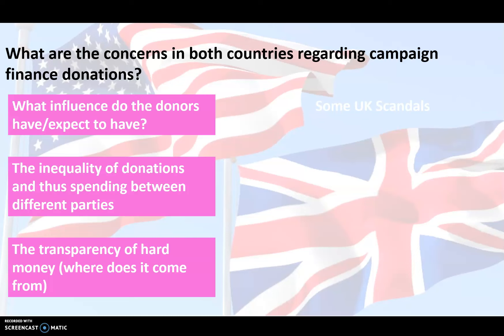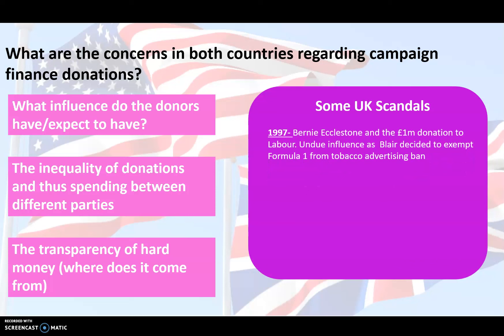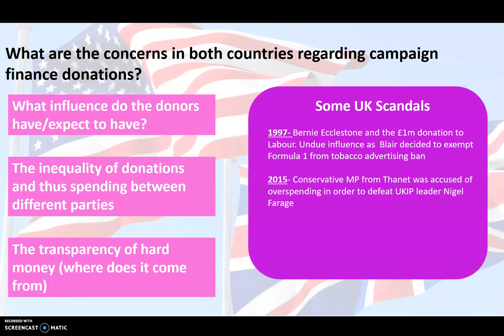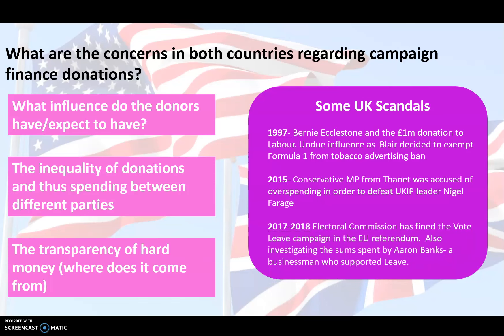Both countries have had scandals regarding campaign finance donations. In the UK, there's the Bernie Ecclestone one — he gave a million pounds to the Labour Party in 1997. He ran Formula One, which used tobacco advertising. When Blair later that year passed a law to ban tobacco advertising in sports, Formula One was excluded. He said there was no connection. In 2015, the Conservative MP for Thanet was accused of overspending. In fact, the Conservatives were fined for overspending in 15 constituencies, and the Electoral Commission also fined the Vote Leave campaign for some of their spending.